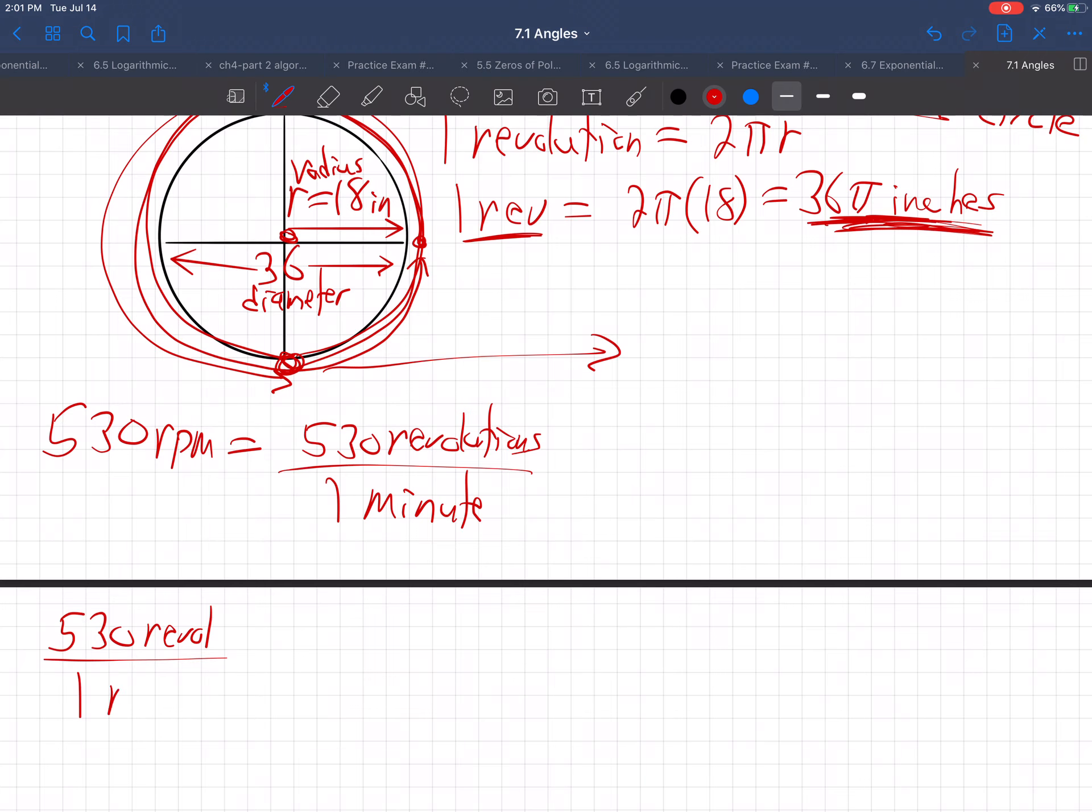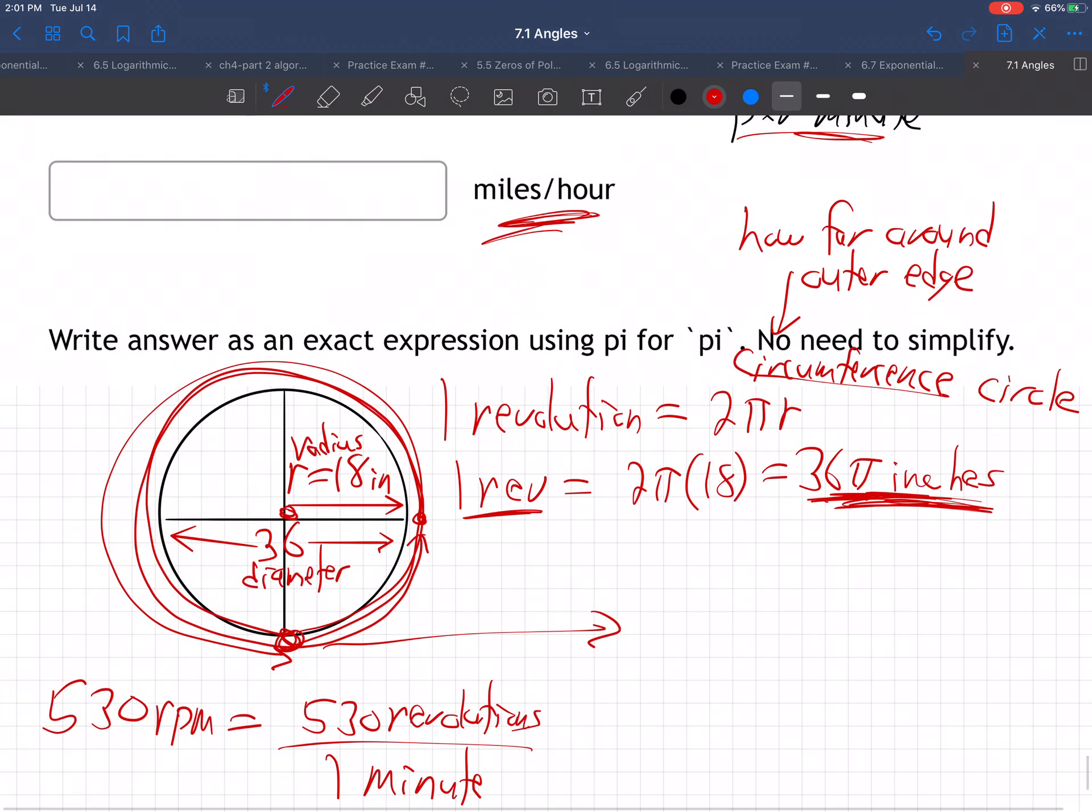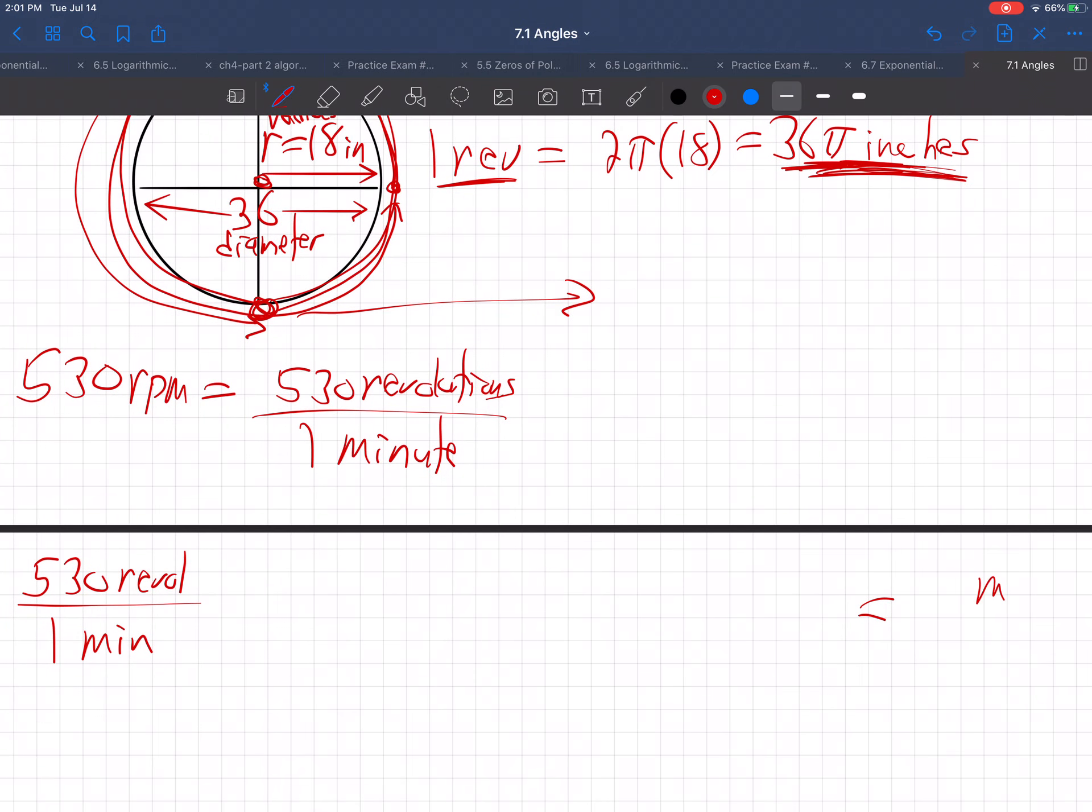530 revolutions per one minute. And in the end, they asked us to find out miles per hour. So this is like what I learned in chemistry, how to convert units. This will be a good problem for practicing unit conversion. We're starting with revolutions per minute. We want to end up with miles per hour. So here we go.